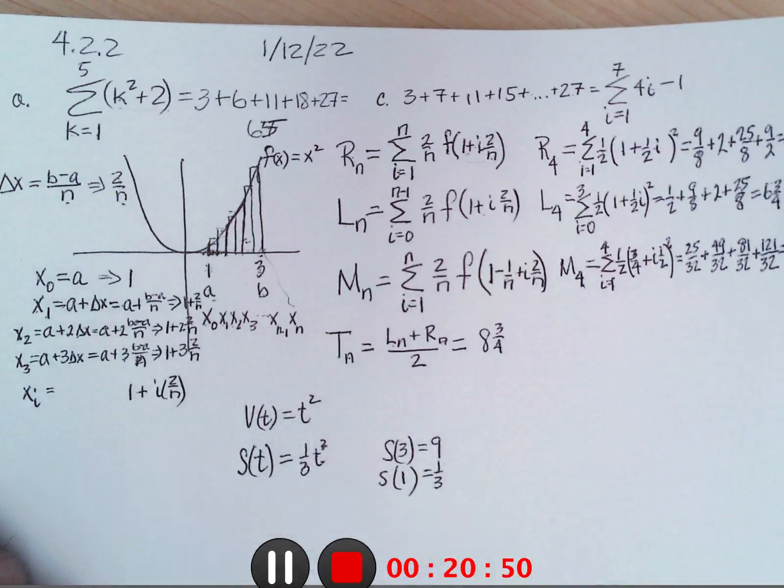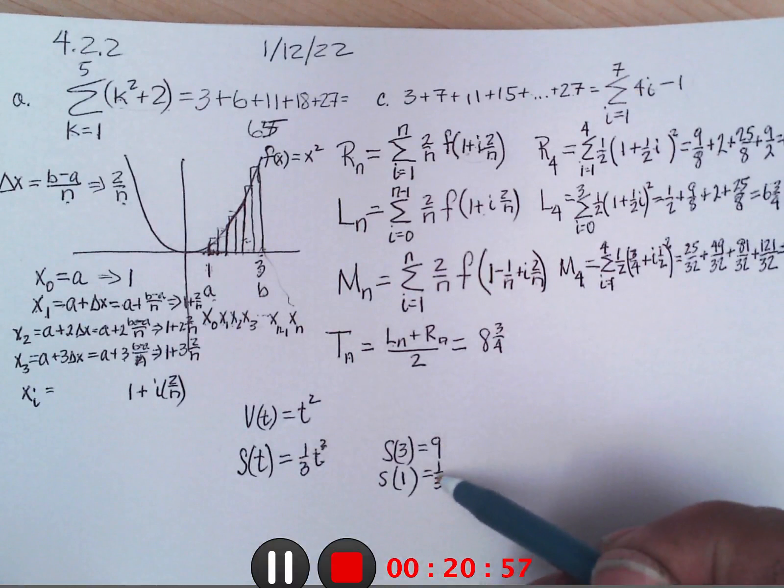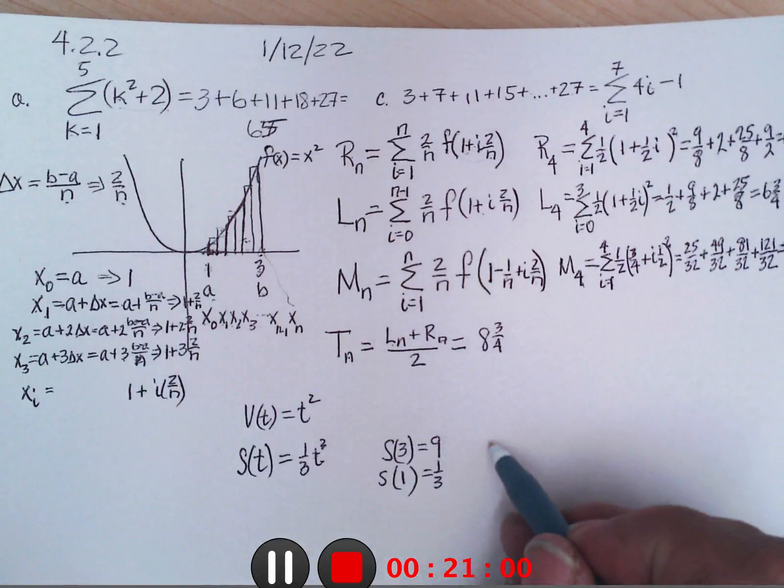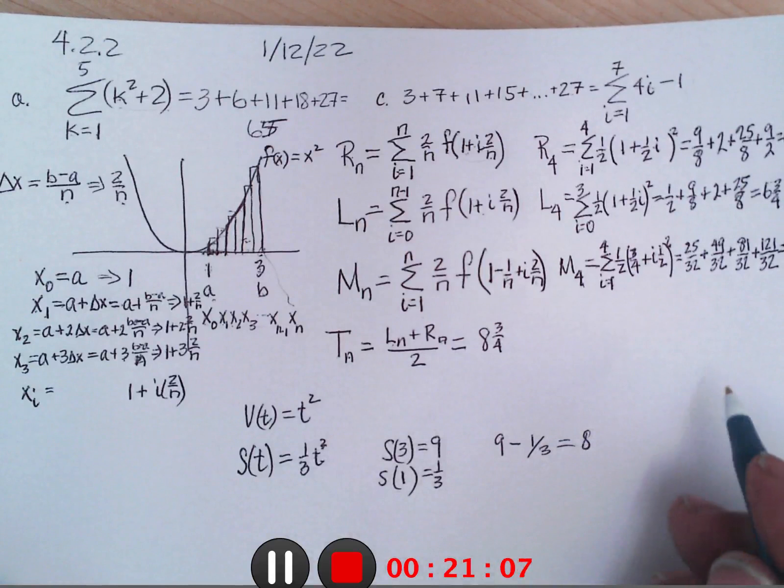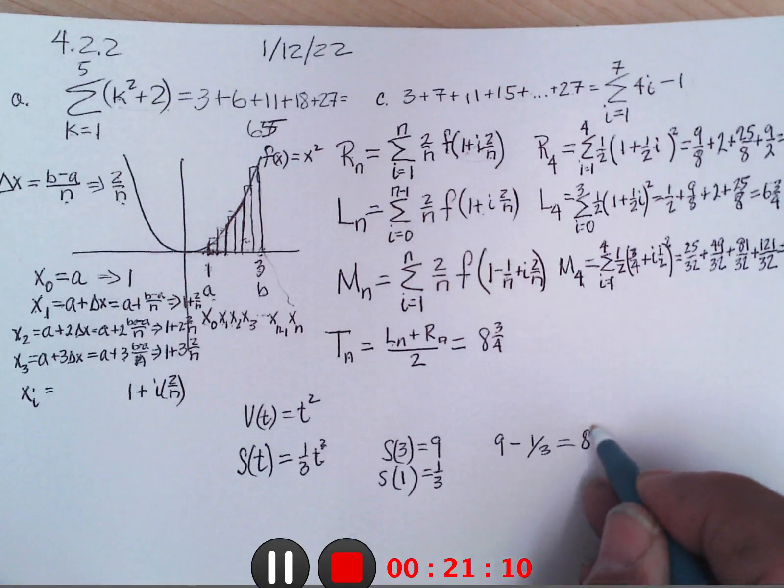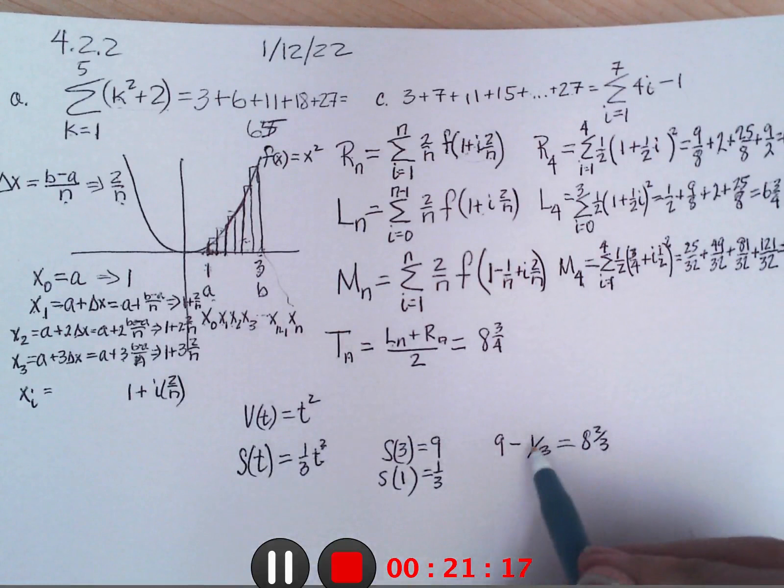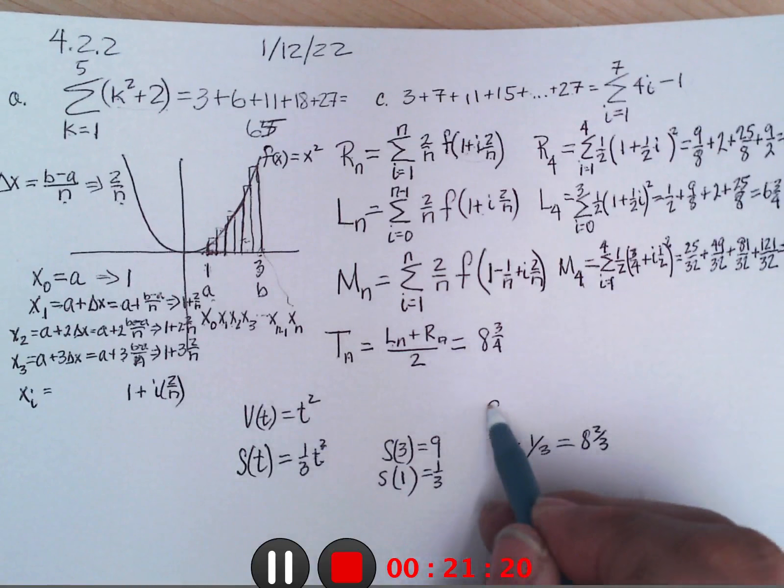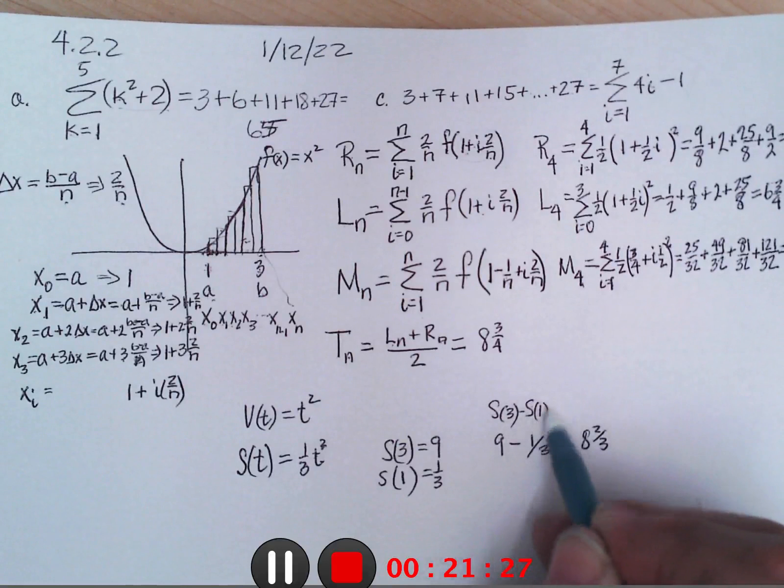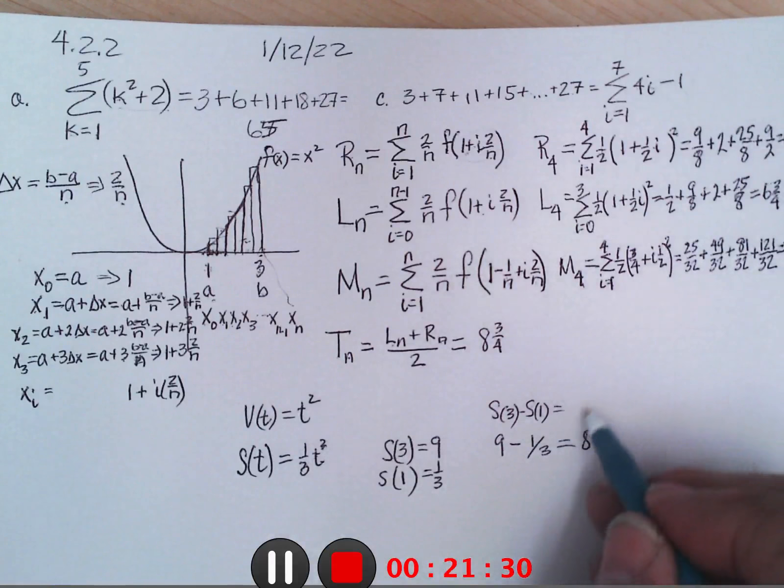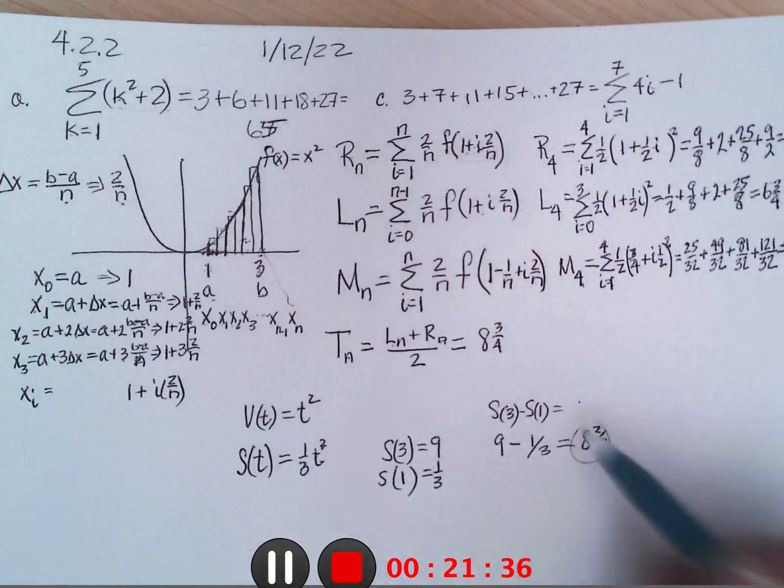So the area under here expresses the change in position. Well it looks like it changed from 1 third to 9, so we would take 9 minus 1 third and get 8 and 2 thirds. That would be s of 3 minus s of 1, 9 minus 1 third, which is 8 and 2 thirds. That turns out to be the actual area under the curve.